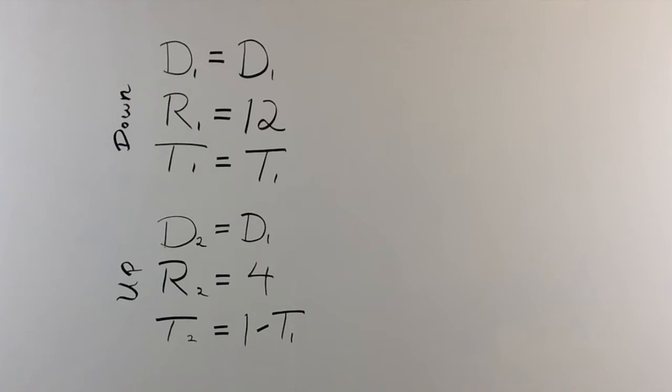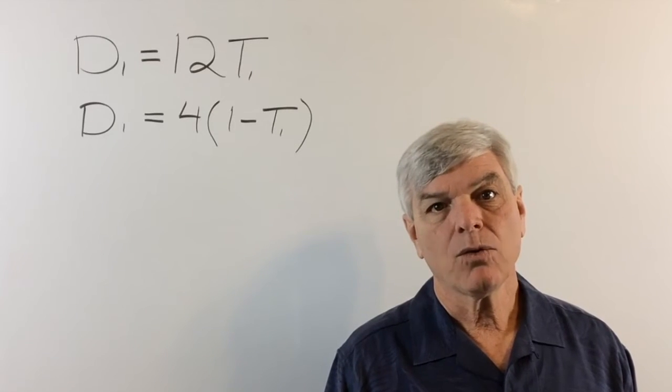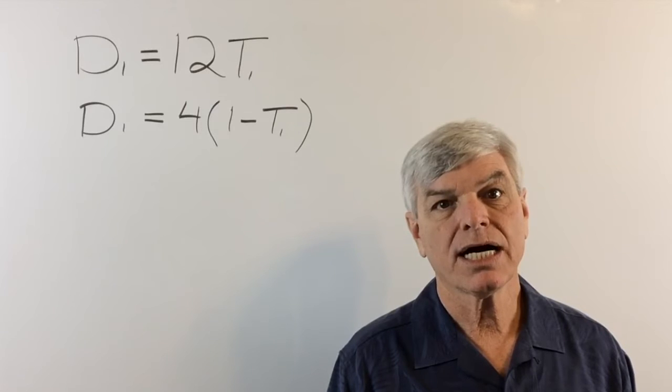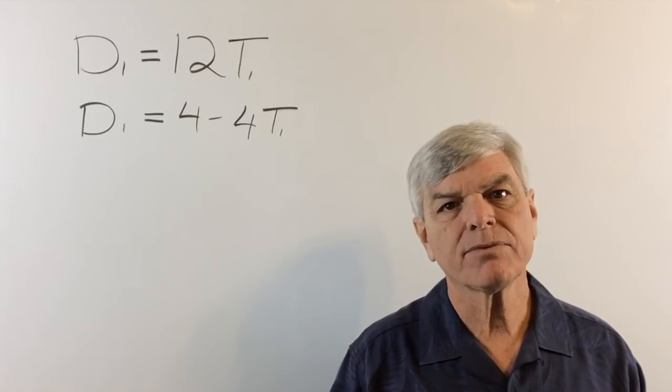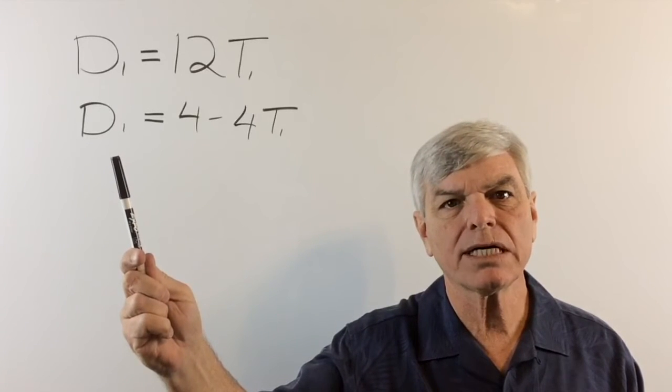D2 equals D1. That is the value we put in. R2 is going to equal 4. And T2 is going to equal 1 minus T1. So that is the formula for our second body in motion. And why don't we bring that out of parentheses, 4 times 1 minus T1. So we have a simple formula for D1 here. And we have a simple formula for D1 here.